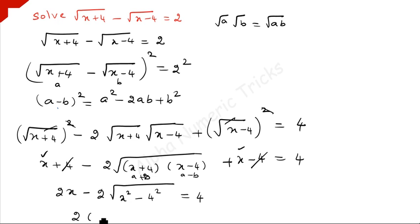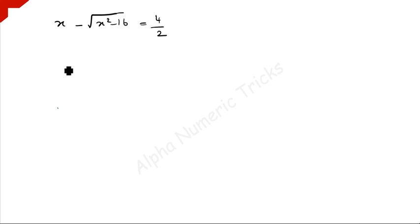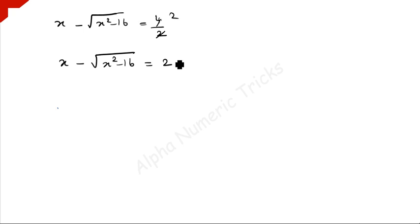We can take 2 outside: 2 times x minus square root of x squared minus 16 equals 4. Dividing both sides by 2, x minus square root of x squared minus 16 equals 2. Rearranging, we get x minus 2 is equal to square root of x squared minus 16. Now we square both sides again.